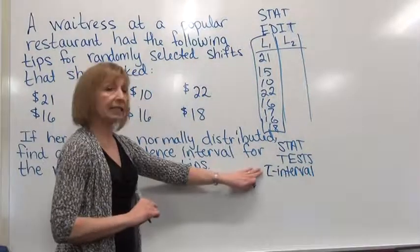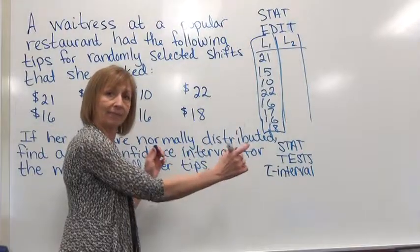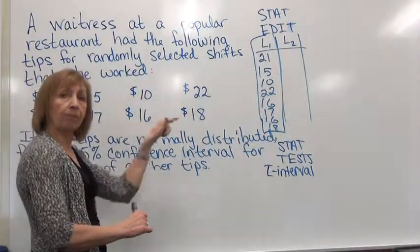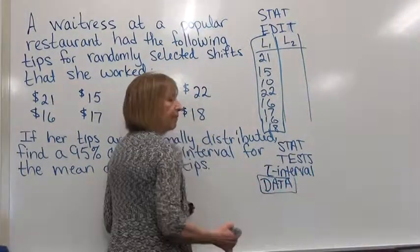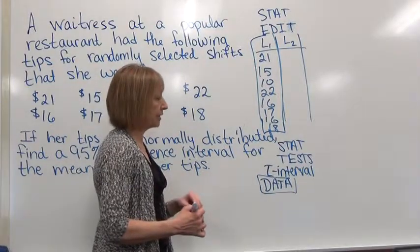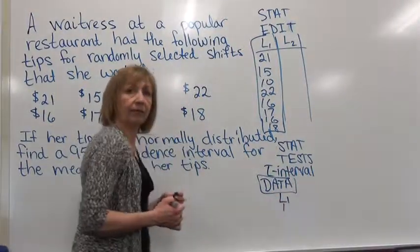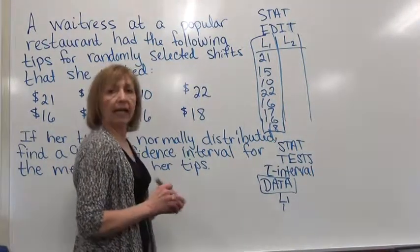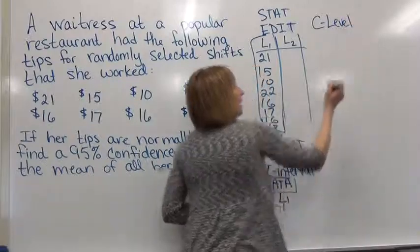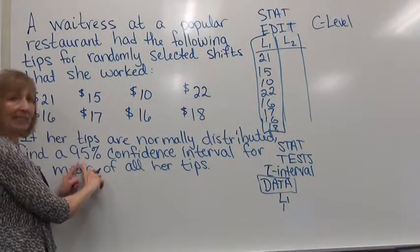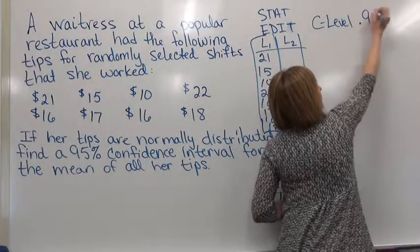Now once you choose the T interval under that option, you'll see the very first thing that asks if you've got data or if you have stats. Now when we have the individual values from our sample, that's when we have data. So you want to make sure that you have data highlighted. And then when you choose that, you'll get a set of options. And the next thing it'll ask you is where your values are. And our values are in list one and our frequency is just one. Now underneath that we then will look and it asks for a C level. And the C level is looking at your confidence interval level in decimal form. So across from C level we're going to put 0.95. And then calculate.